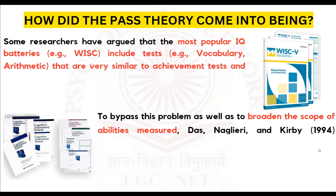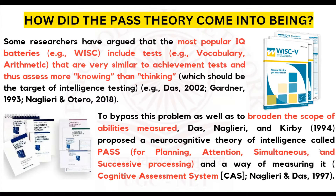Before diving into the theory, let me take a few seconds to explain why this theory came into being. When this theory was developed, other theories of intelligence already existed. Some researchers argued that the most popular IQ test batteries included test items which were more assessing the knowing of a person rather than the thinking of a person — what the person already knew — and not what the person would think or process in a particular situation. This was the criticism the researchers based this model on, and they wanted to broaden the scope of the abilities being measured by IQ tests.